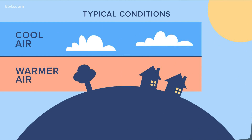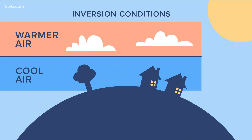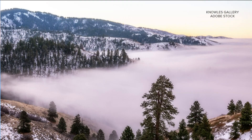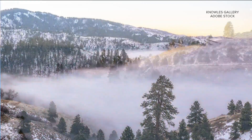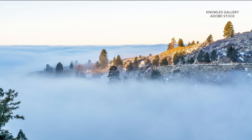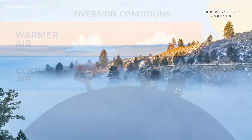An inversion is a weather term for when an air mass above us gets flipped upside down. Instead of getting colder as you rise in elevation, it stays the same or gets warmer. The cold, dense air settles into lower elevations, and a layer of milder air goes over it — just like a lid — which doesn't allow the air to mix.